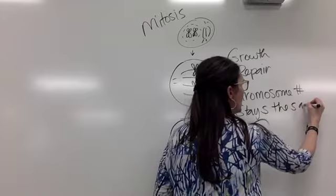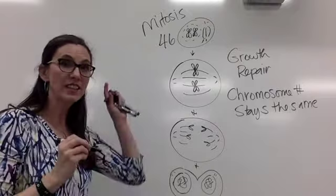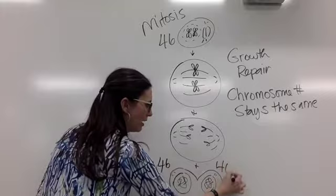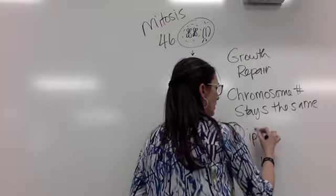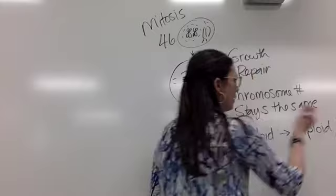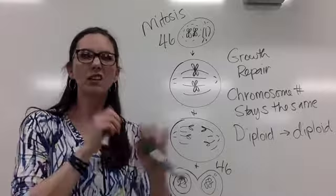Chromosome number stays the same. What that means is this cell had 46 chromosomes. That's the diploid number. These two cells are going to have 46 apes. They're going to be diploids. It goes diploid to diploid. The chromosome number does not change. Alright, so that's mitosis.